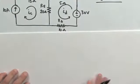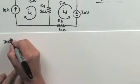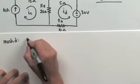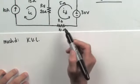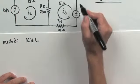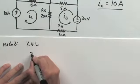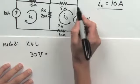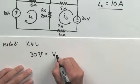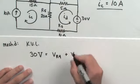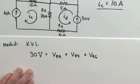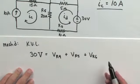Mesh D is right here. Using Kirchhoff's voltage law — which states that the sum of all potential gains and losses around a loop must equal zero — we have a potential gain of 30 volts across this voltage supply. So those 30 volts must be dropped across the remaining resistors in the mesh: 30 volts equals the potential dropped across R4, plus the potential dropped across R5, plus the potential dropped across R6.